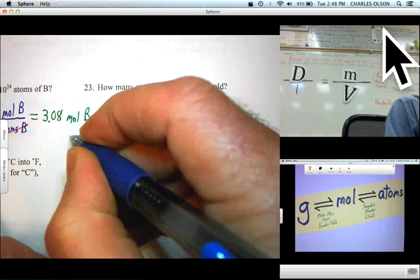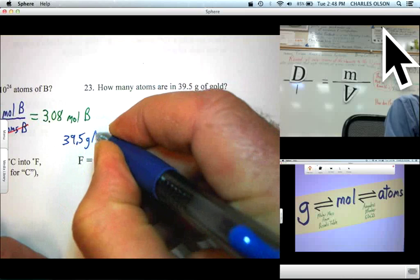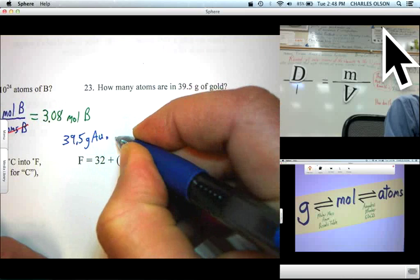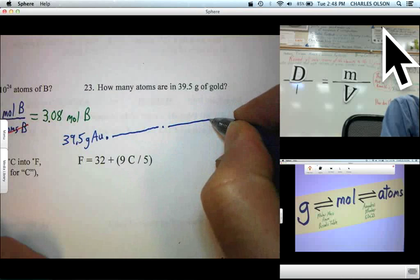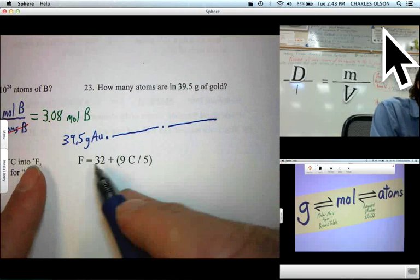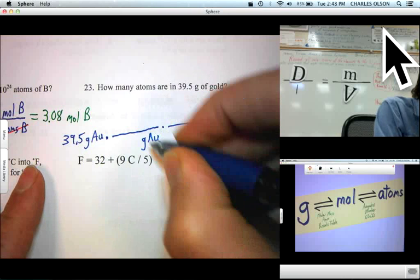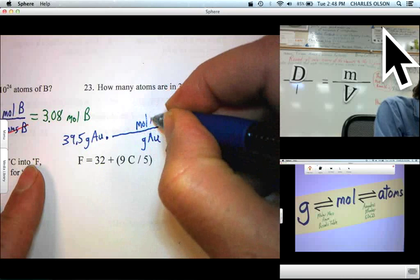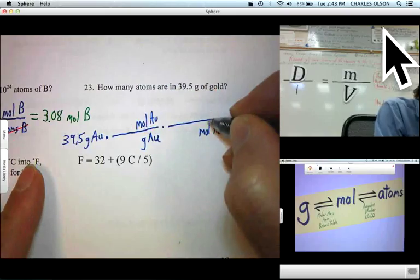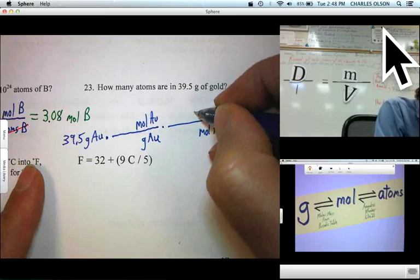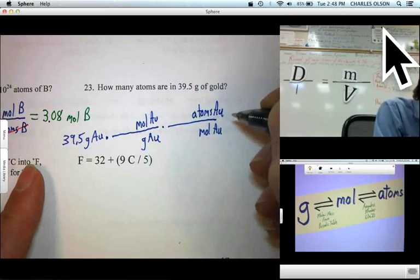Our given is 39.5 grams of gold times, and we're going to need two conversion factors. And we get out of grams of gold into moles of gold, and out of moles of gold into atoms, atoms of gold. All right.